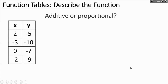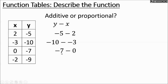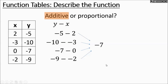Next table: is it additive or proportional? Dividing shows they don't come out the same, so let's try y minus x. Negative 5 minus 2, negative 10 minus negative 3 — don't forget the double negative — negative 7 minus 0, and negative 9 minus negative 2. Those double negatives become pluses: negative 10 plus 3 and negative 9 plus 2. They all work out to negative 7. So we're subtracting 7 from every x — it's an additive relationship. The rule is y equals x minus 7.